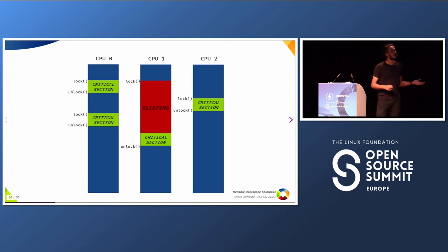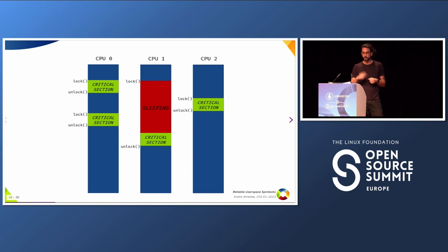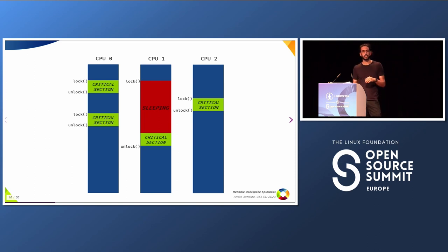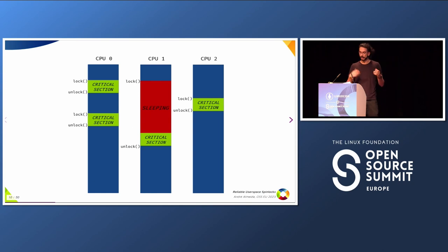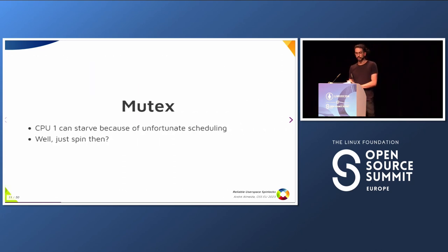A very contended case with small critical sections can suffer using mutexes, because instead of doing the work you're supposed to do, you are wasting a lot of CPU cycles just locking and unlocking. For instance, let's say we have three threads, one on each CPU. The critical section is very small. CPU 0 gets the lock, CPU 1 wants to take the lock but it's too late and goes sleeping. Sleeping and doing the context switch is so expensive that another thread on CPU 2 can take the lock when it's free, and CPU 1 only gets the lock way after. So a CPU can starve because of scheduling.